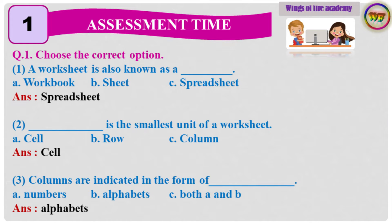Question 1: Choose the correct option. Question 1: A worksheet is also known as a dash dash. Answer: Spreadsheet. Question 2: Dash dash is the smallest unit of a worksheet. Answer: Cell. Question 3: Columns are indicated in the form of dash dash. Answer: Alphabets.